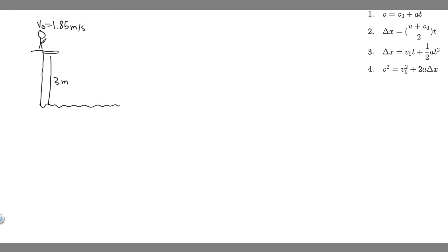In this problem, we're told a diver runs horizontally off the end of a diving board with an initial speed of 1.85 meters per second. If the diving board is 3 meters above the water, what is the diver's speed just before she enters the water?